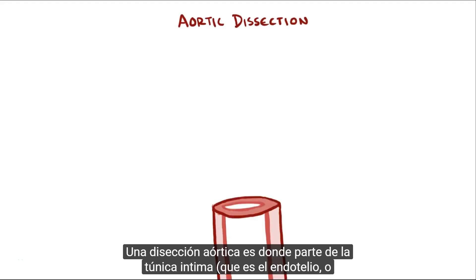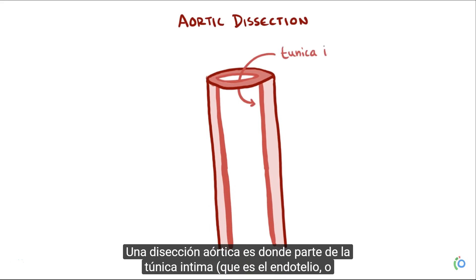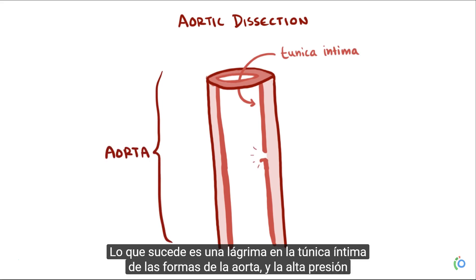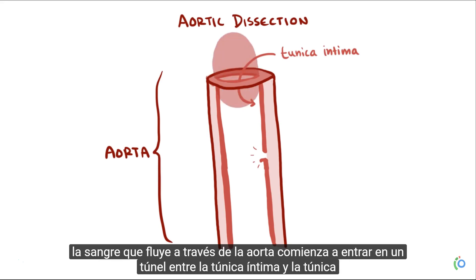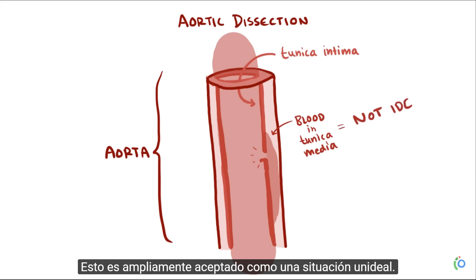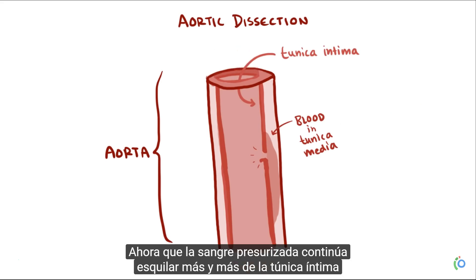An aortic dissection is where part of the tunica intima, which is the endothelial or innermost layer of a blood vessel of the aorta, is ripped off. What happens is a tear in the tunica intima of the aorta forms, and the high-pressured blood flowing through the aorta begins to tunnel between the tunica intima and the tunica media, separating the two layers.